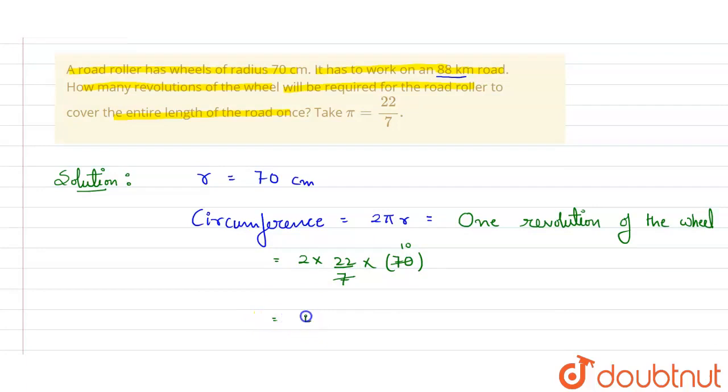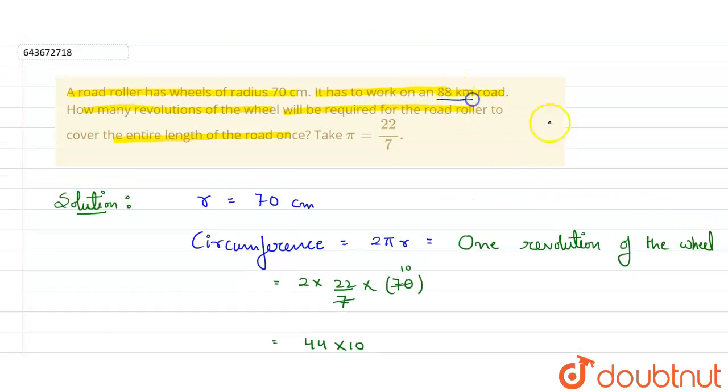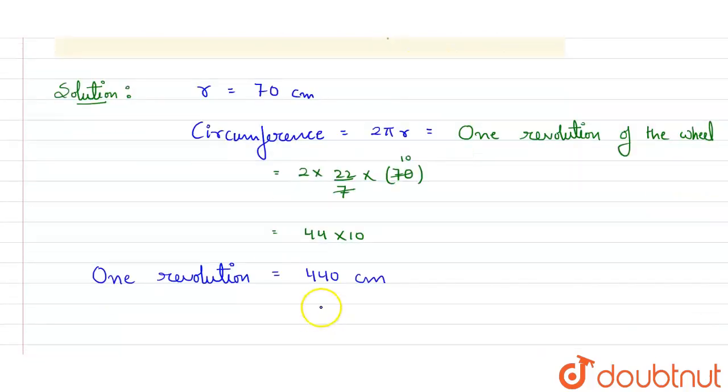So its value will be 44 multiplied with 10. So here I can write one revolution distance will be equal to 440 centimeter. But here unit is kilometer, so I have to convert 440 centimeter into kilometer.